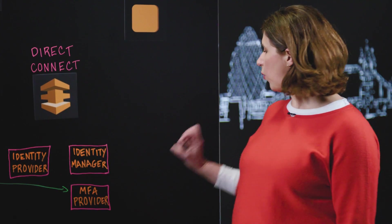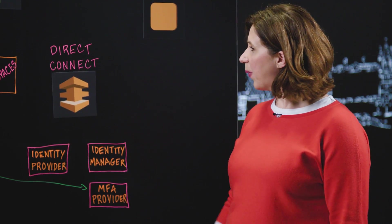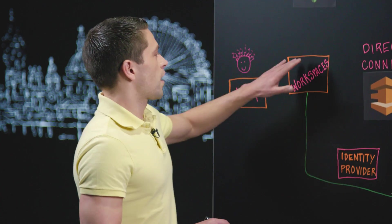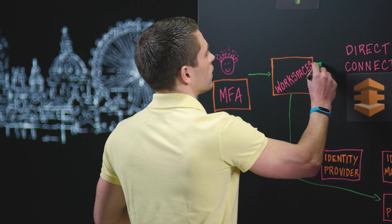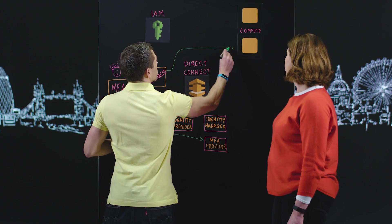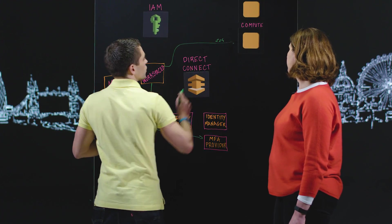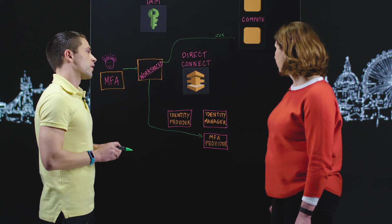Okay. So they've authenticated. What happens next? Yeah. Now they have access to their workspace. Now they can, for example, SSH to their compute resources. Right, so that gives them that permission.